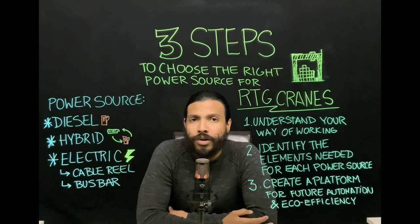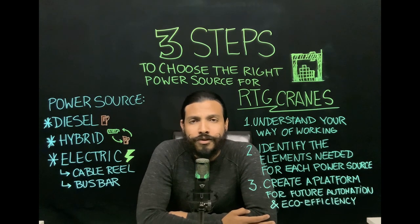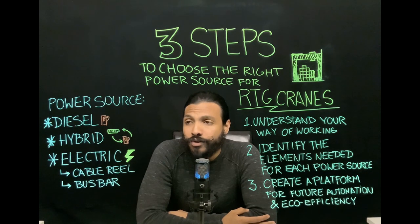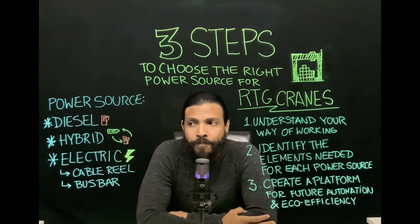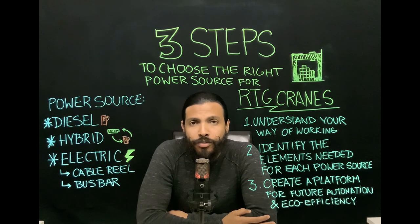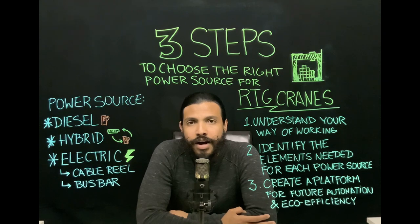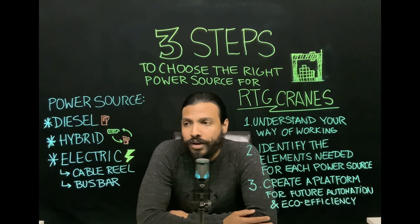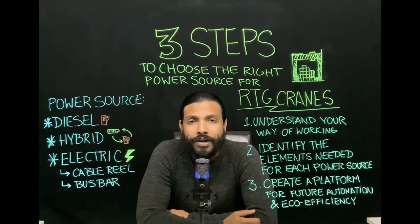When it comes to the power sources: diesel is well-known equipment — today you can find RTGs with smaller engines resulting in less fuel consumption and less CO2 emissions. The hybrid concept is really interesting and most customers are now evaluating these options. Finally, we have the electric solution — normally you will find cable reel solutions or bus bars, depending on the infrastructure and terminal needs. The electric solution offers zero local emissions, which is why many customers are evaluating it and matching it with future automation.